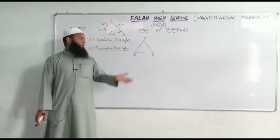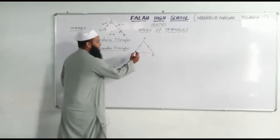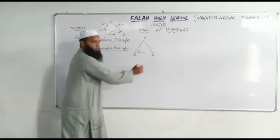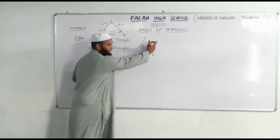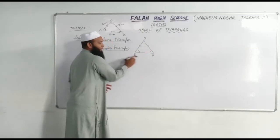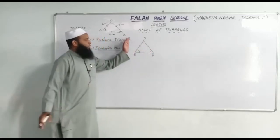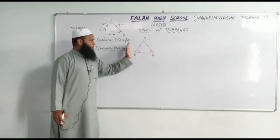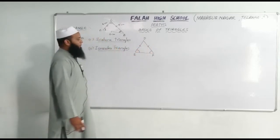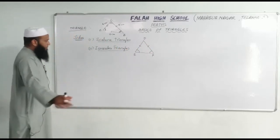One more property of this triangle is: if two sides are equal, angles opposite to equal sides are also equal. DE is a side — opposite to it is angle F, and angle F is opposite to DE. So angles opposite to equal sides are also equal. This is a property of isosceles triangle. You should remember this.